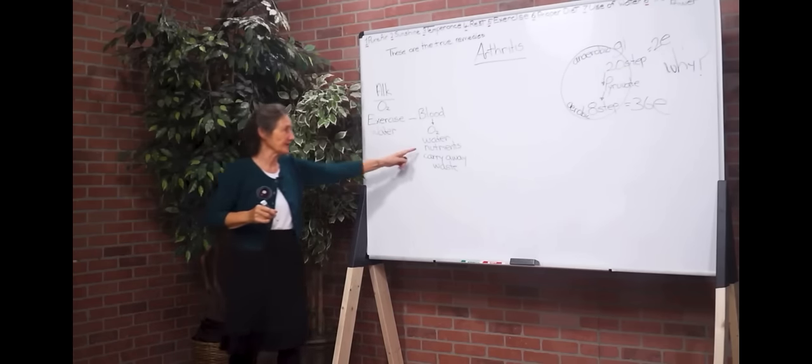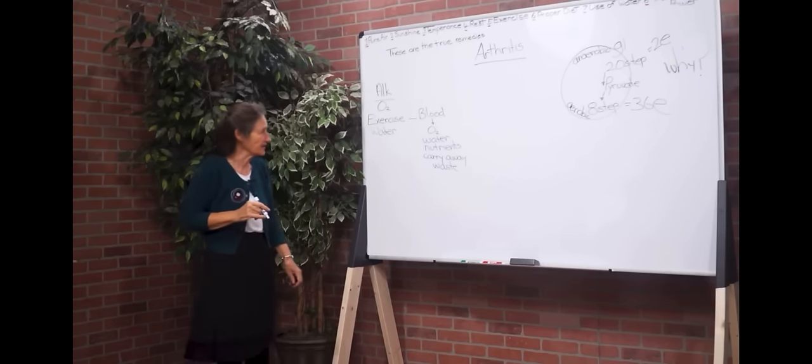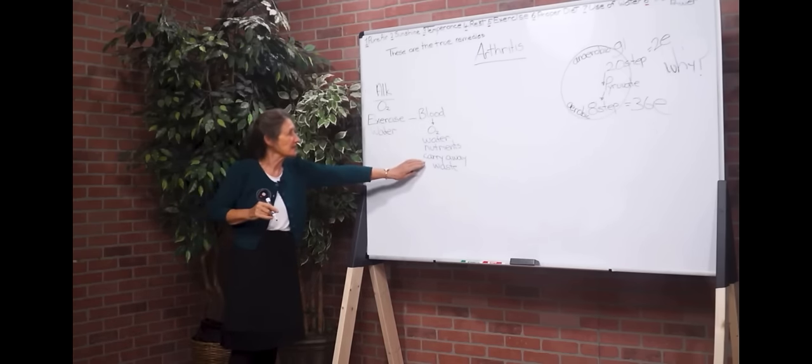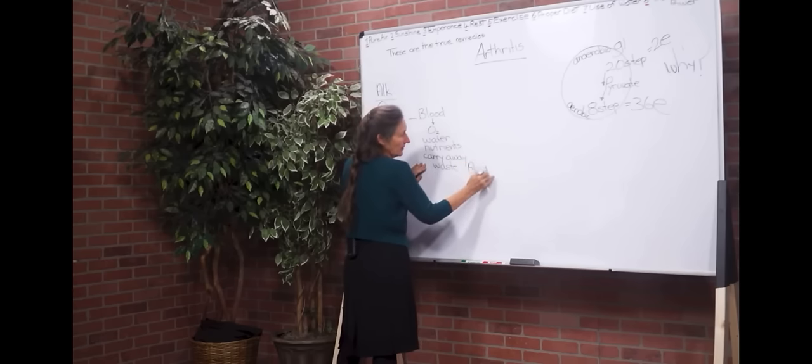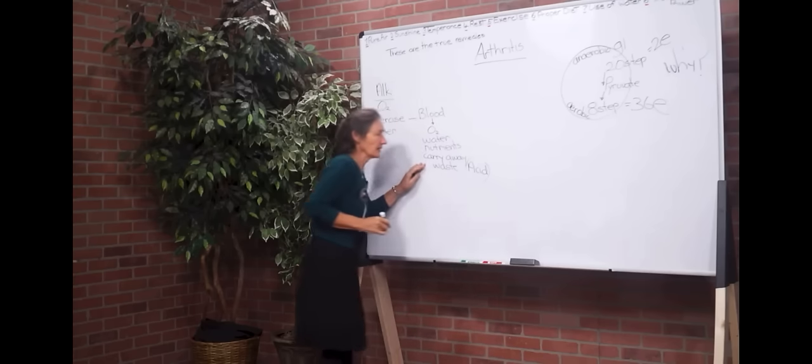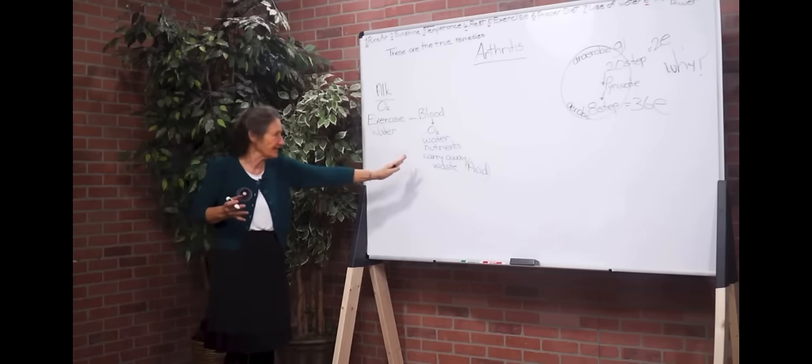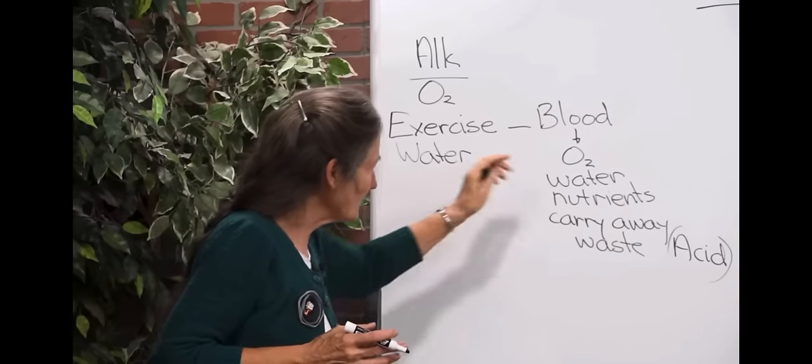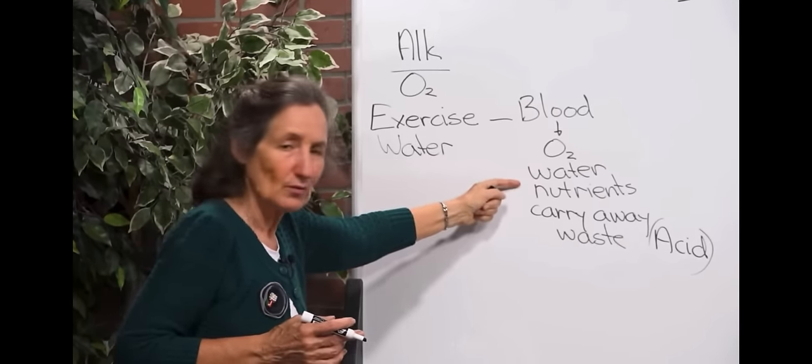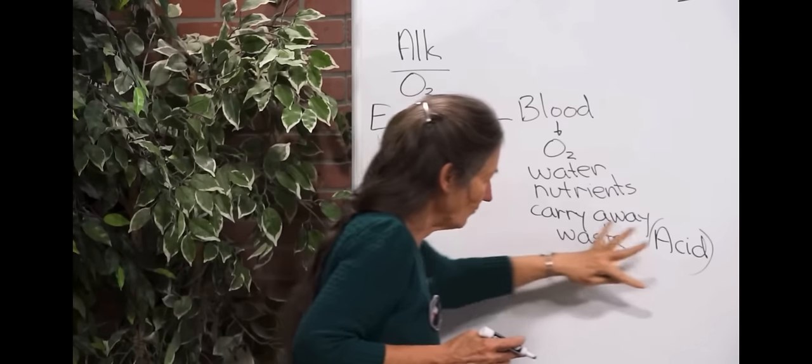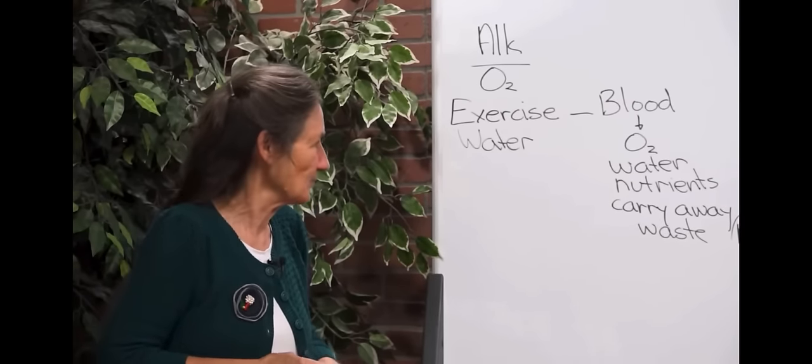We're going to look at foods in a minute. We're going to look at the foods that have an alkalizing effect and the foods that have an acid effect. And waste is acid. So getting blood into the joints of an arthritic or a gout person, you're immediately bringing in two powerful alkalizers, which is the oxygen and the water. And you're carrying away one of the biggest acidic forming substances, which is waste.